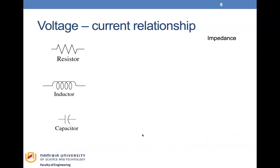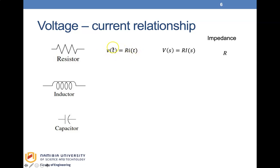We have three basic elements: the resistor, the inductor, and the capacitor. For the resistor, the voltage-current relationship is V equals R times I. Taking the Laplace transform gives V(s) equals R·I(s), so the impedance for the resistor is R.